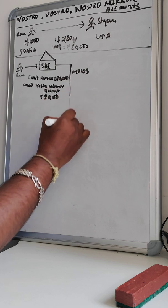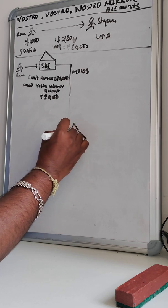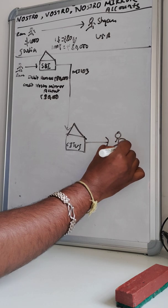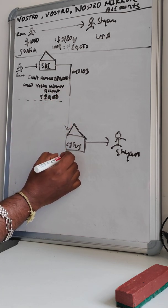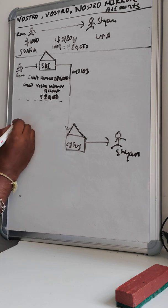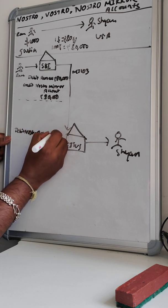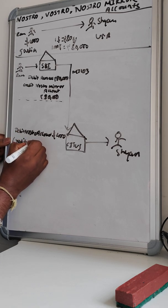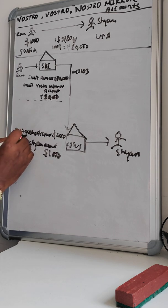At the receiver end — which is Citibank US — some accounting entries also happen. Citibank US will debit the Nostro account by one thousand dollars and then credit Sam's account with one thousand dollars.